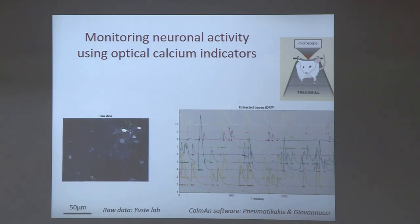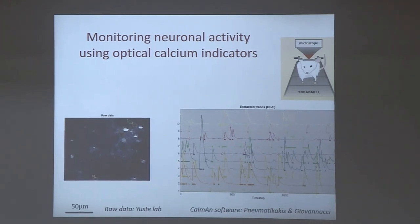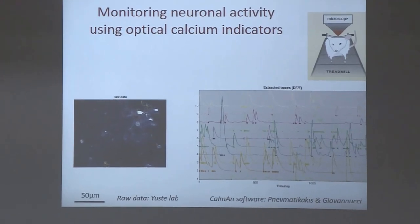Two points to remember from this diagram: neuronal activity is sparse — at any given time only a small fraction of neurons is active — and neuronal activity doesn't change sign, so we will take it as non-negative.